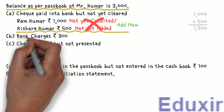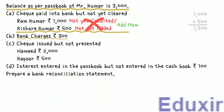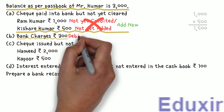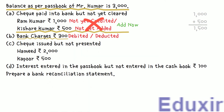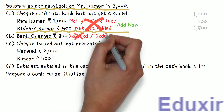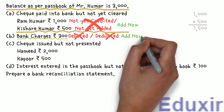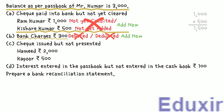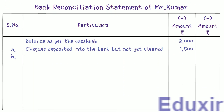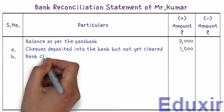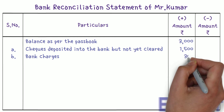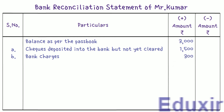The next detail: the bank has charged Rs. 300 of bank charges. These bank charges are debited in the bank passbook. However, Mr. Kumar does not know about these charges until the bank statement is received, so they may not have been credited in his cashbook. We need to add these bank charges back to the passbook balance to get the cashbook balance. We enter the particulars as 'bank charges' and write Rs. 300 in the plus amount column.